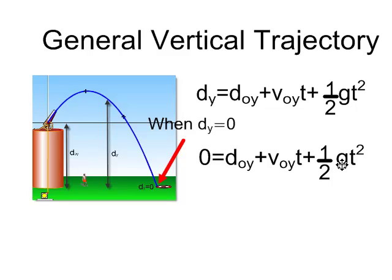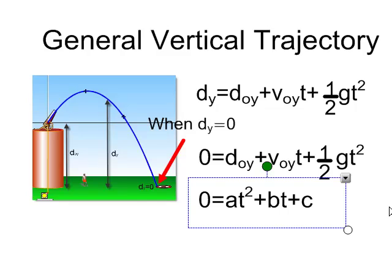However, if you do get a problem where you're supposed to solve for t, you'll notice there's a lot of similarity between this equation, which is our trajectory equation, and this equation, which is the generalized quadratic. And so you'll notice that my a can be given by one-half g.